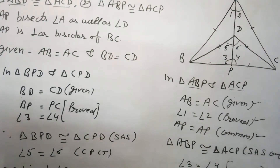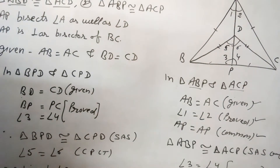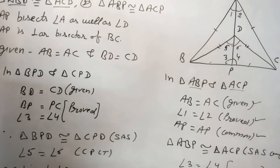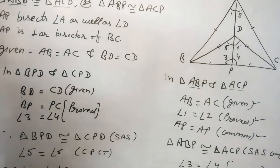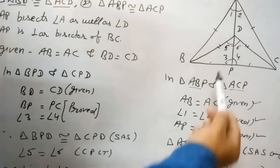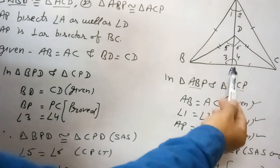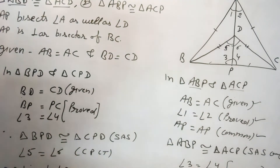Now we need to prove that AP is the perpendicular bisector of BC. Since angle 3 and angle 4 are equal, as proved in the second part, and they form a linear pair, if both angles in a linear pair are equal then each angle must be 90 degrees. So AP is perpendicular to BC, and since BP equals PC, AP is the perpendicular bisector of BC.